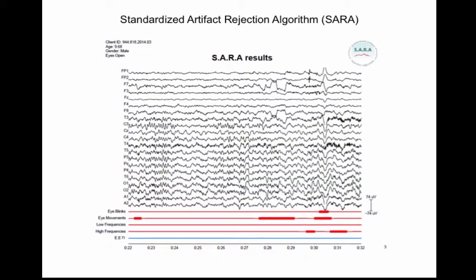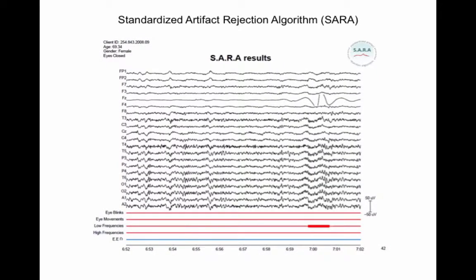The next example shows a segment of EEG that contains both eye blinks, eye movements, and high-frequency artifacts, present in different channels. Here, a low-frequency artifact is detected at FZ.